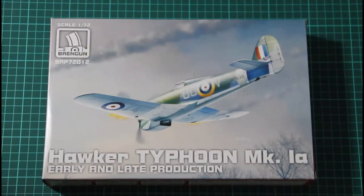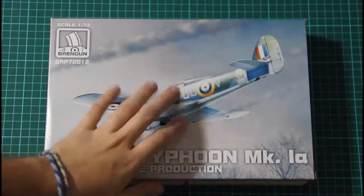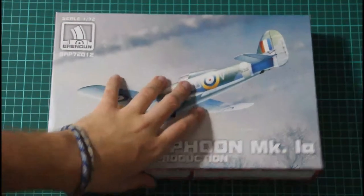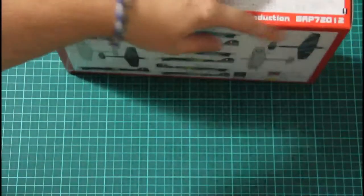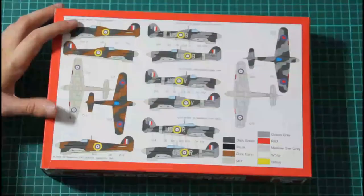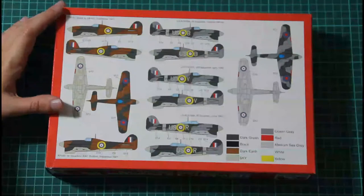As you can see on the top of the box we have this nice box art. I think it's a painting because we have here a signature. This is a 1/72 scale kit as usual. On the sides we have some safety information.